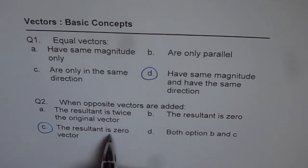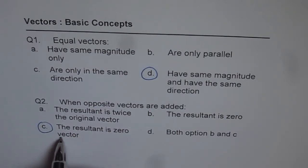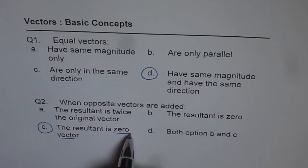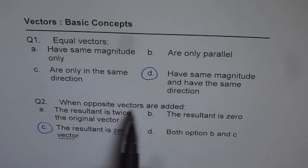The resultant is 0 vector. It is important to understand that when you add opposite vectors, you get a vector and that is a 0 vector.